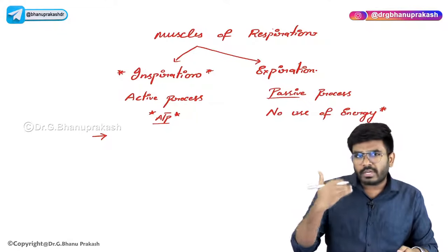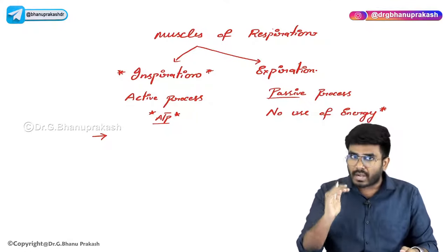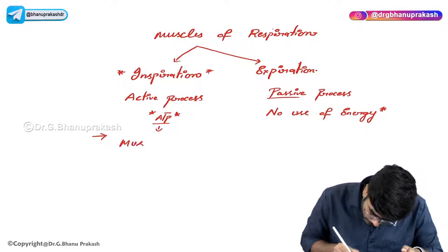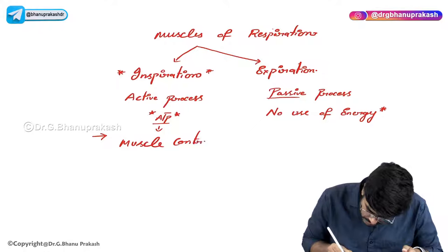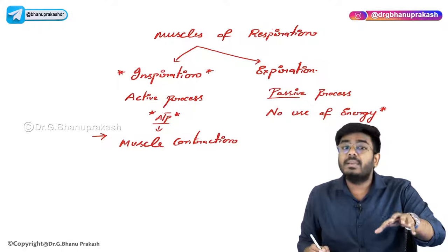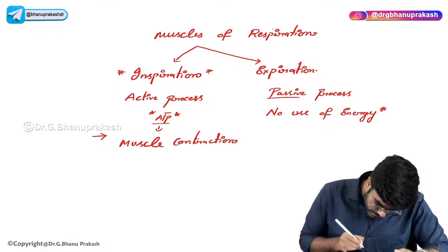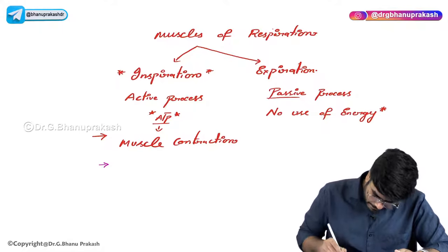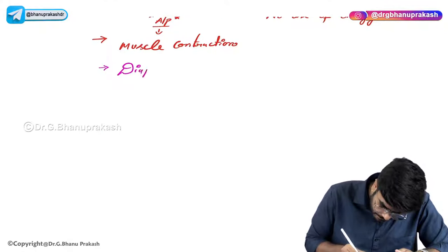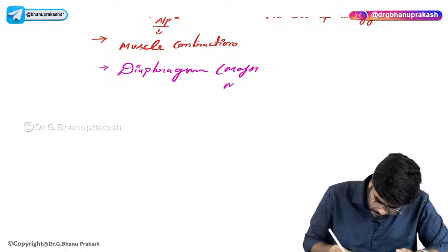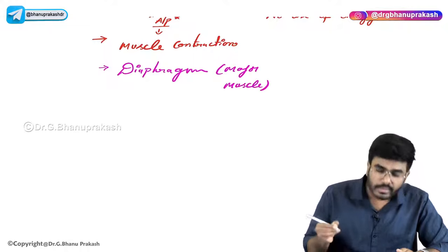How air enters the lungs we will discuss later. But for now, ATP is used for muscle contraction — specifically the muscles helping in the process of inspiration, called inspiratory muscles. The major inspiratory muscle is the diaphragm.